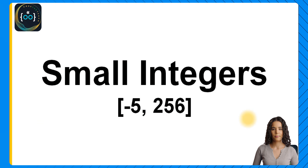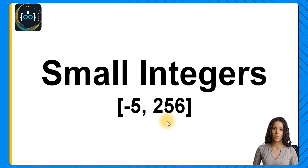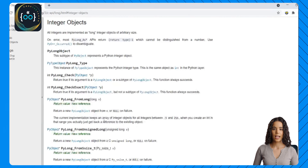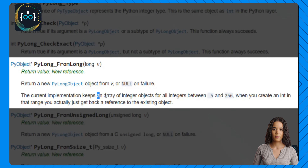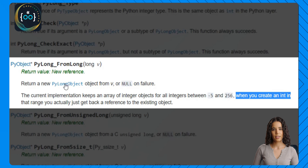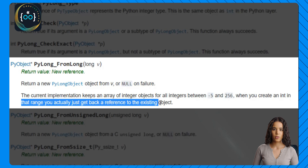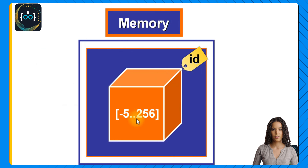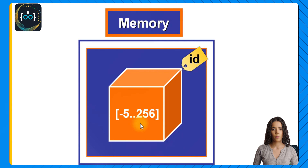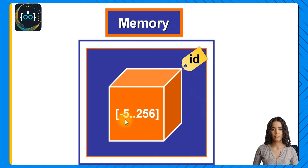Small integers are one of these cases — specifically small integers ranging from -5 to 256. The Python documentation explains: the current implementation keeps an array of integer objects for all integers between -5 and 256. When you create an integer in that range, you actually just get back a reference to the existing object. So when we access one of these integers from -5 to 256, we're actually reusing existing objects — the integers with the same value will be the same object in memory.